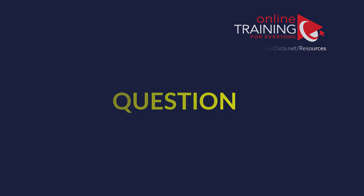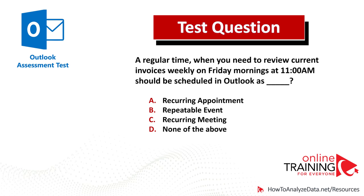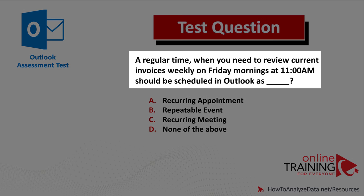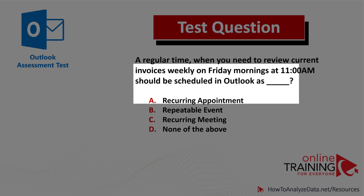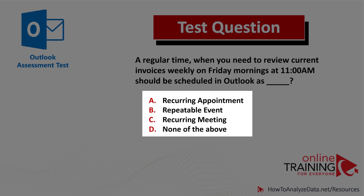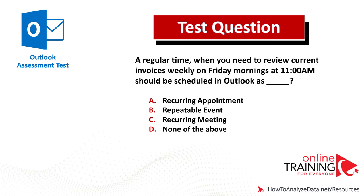Let's look at another question you might frequently see on the test. A regular time when you need to review current invoices weekly on Friday mornings at 11 a.m. should be scheduled in Outlook as: Recurring Appointment, Repeatable Event, Recurring Meeting, or None of the Above. Do you think you know the answer? Let's see if we can get to the correct answer together.